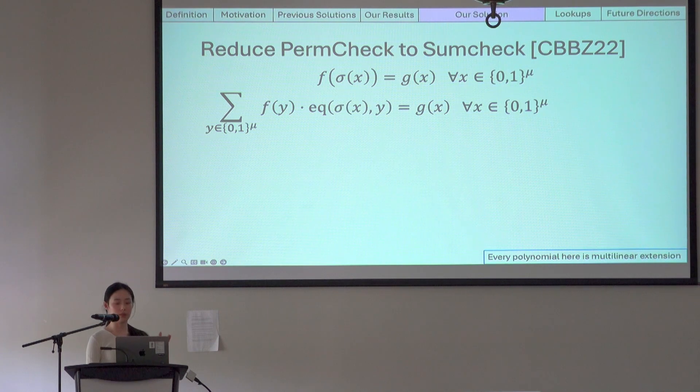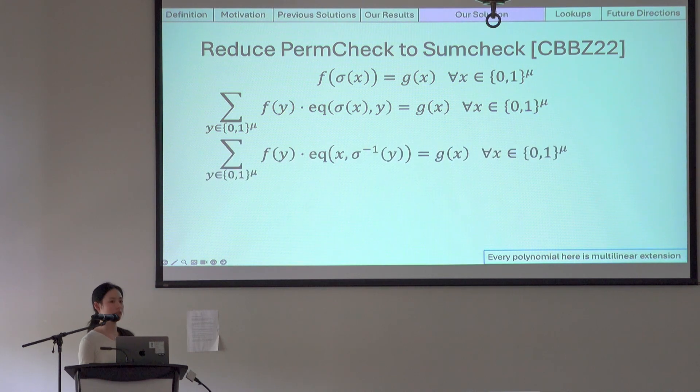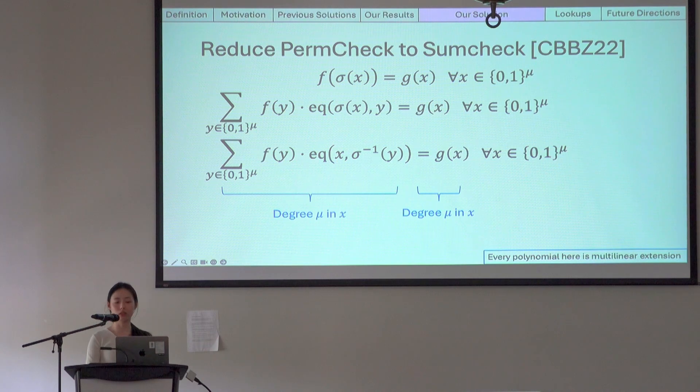And since sigma is a permutation, sigma is injective and therefore invertible, so it is equivalent to writing EQ X comma sigma inverse of Y. Now observe that the left side of the equality is degree mu in X, and the right side is also degree mu in X. Since they are both multilinear in X, then they must be the same polynomial if they agree over the entire Boolean hypercube.